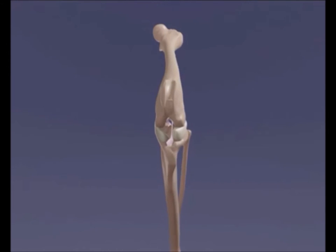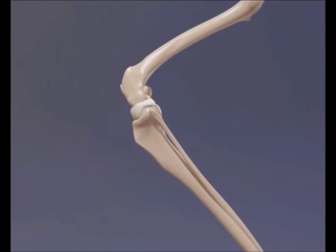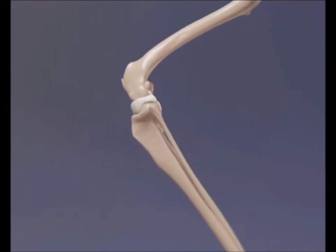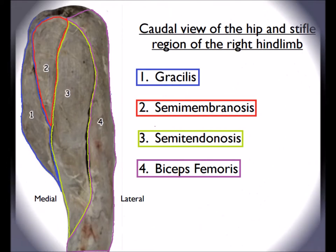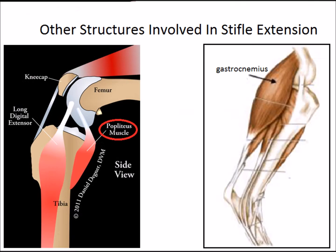Flexion is essentially the reverse of extension, where there is a decrease in the angle between two bones. Unlike stifle extension, flexion of the knee isn't as simple due to the involvement of various muscles. While the hamstring is the predominant muscle involved in knee flexion, the popliteus and gastrocnemius are also key components in completing the movement.